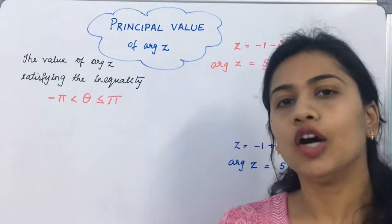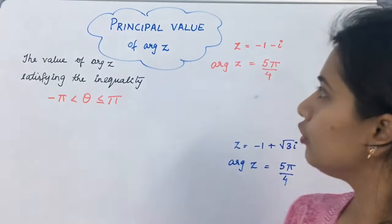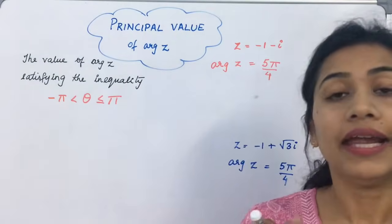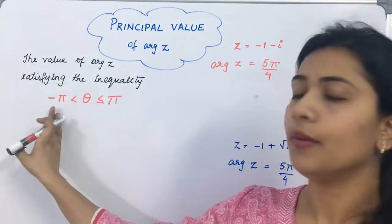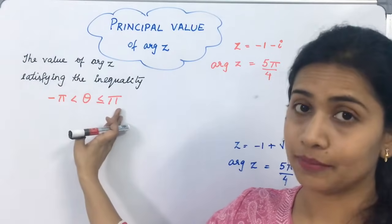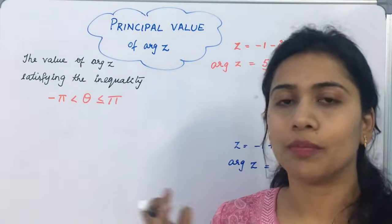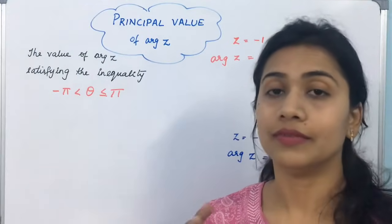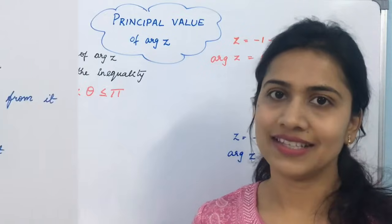After finding the argument, next comes how to find the principal value of argument z. Principal value, what is the first thing that happens? It is that value of argument z which satisfies the inequality minus pi less than theta less or equal to plus pi. That means, if theta's value lies between minus pi and plus pi.